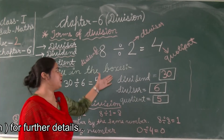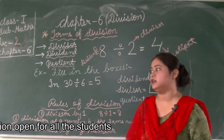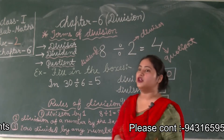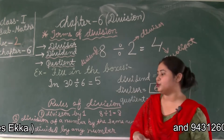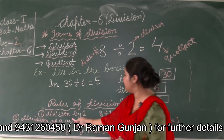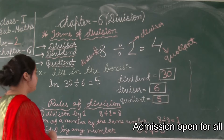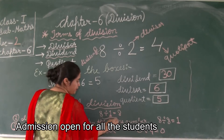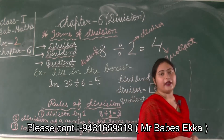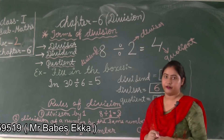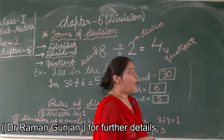Now, there are some rules involved in division. Let me explain them once more. The first rule of division is division by one: if we divide any number by one, we get the number itself. That means if we divide 8 by 1, we get 8. When any number is divided by one, we get the number itself.